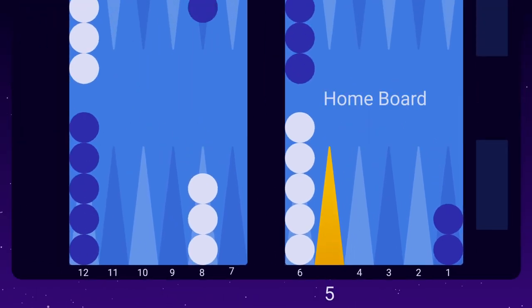The five point is a home board point, or an inner point as we call it. The seven point is an outfield point and won't help you during a blitz.